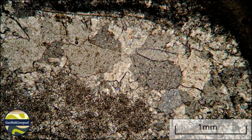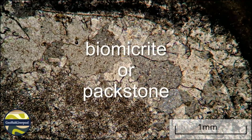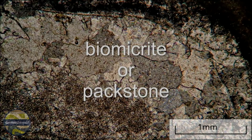It is a bioclastic limestone. This rock would be called biomicrite under Folk's classification system, because it is composed of bioclasts in a micrite matrix. Under the Dunham classification of limestones it would be named a packstone, because it contains mud but it is grain supported — that means the bioclasts touch each other.